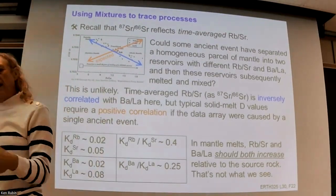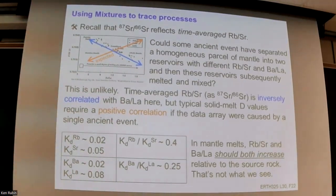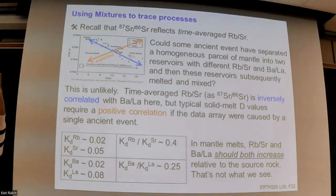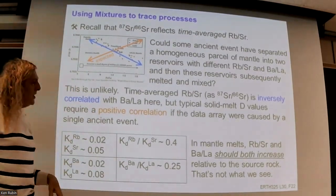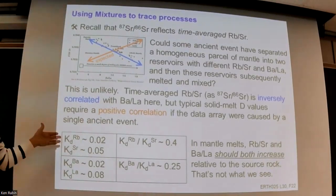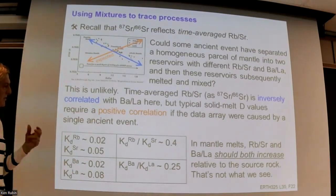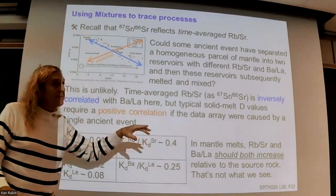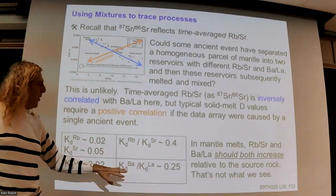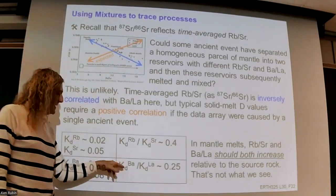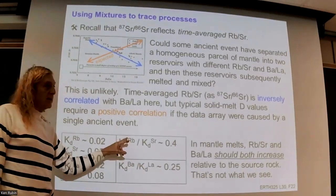We can account for some of this variation with the melting process, but this would have to be operating on a mantle of multiple compositions. If we had long-term heterogeneity in our mantle — subducted material sitting there for half a billion or a billion years with high and low Rb/Sr ratios growing to different 87/86 Sr values — and we melted a lot, we would expect a positive correlation, which we don't get. We get a negative correlation.